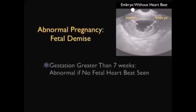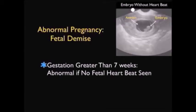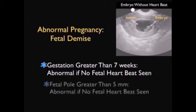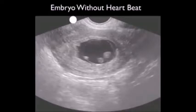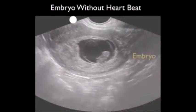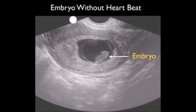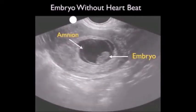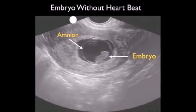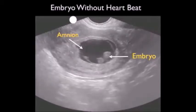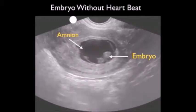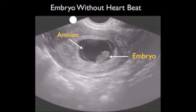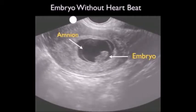Other indicators of an abnormal pregnancy with fetal demise: a gestation greater than 7 weeks is abnormal if no fetal heartbeat is seen, and if the fetal pole is greater than 5 millimeters in dimension, this is abnormal if no fetal heartbeat is seen. This was an unfortunate case in which we see a large fetal pole greater than 5 millimeters without a heartbeat, indicative of embryonic demise. We also see a large circular amnion within the gestational sac. While it's important we're able to pick up the findings of an abnormal pregnancy, I'm always going to get a confirmatory ultrasound and/or OB-GYN consultation before giving the patient the news that there is a fetal demise.